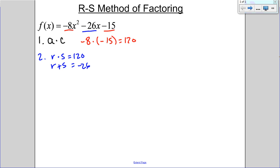Now, if you can't see it right off the bat, I'd try and guess and check some R and S factors that multiply to 120 and see if they have a difference of negative 26. But when you're stuck, list them out.